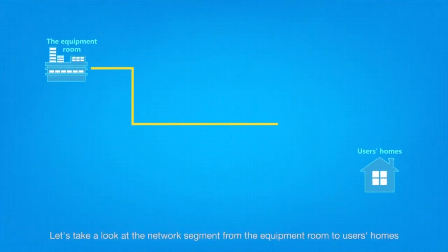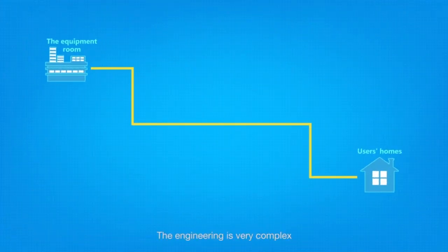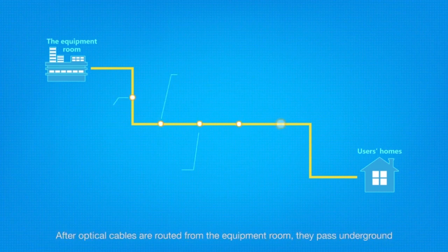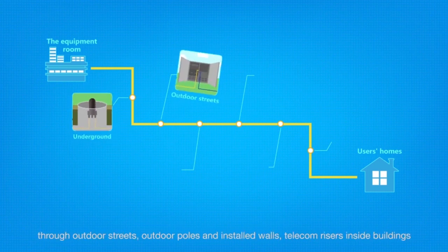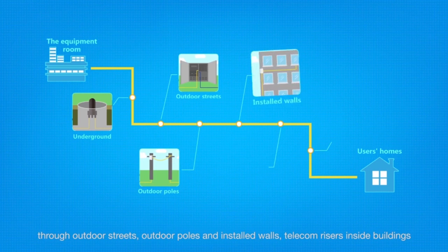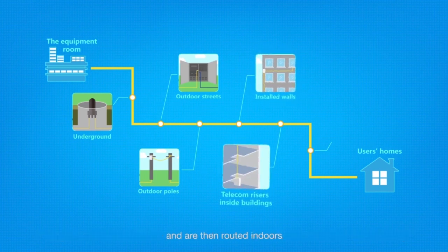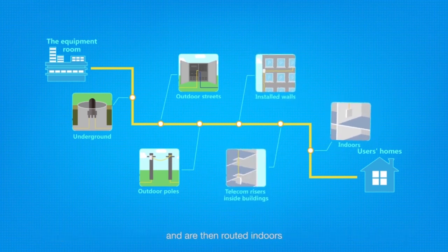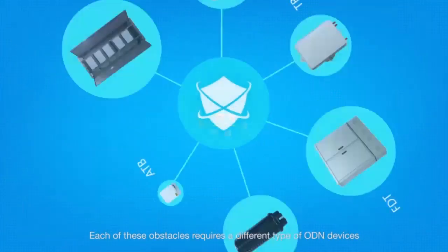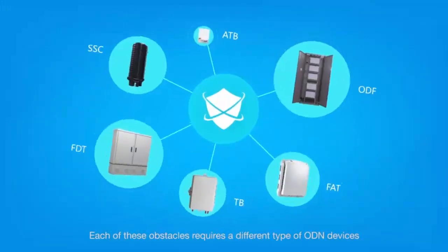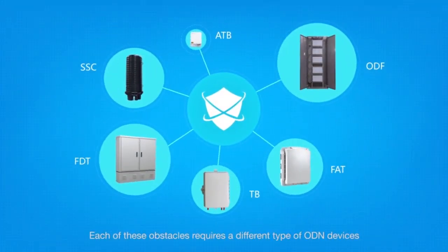Why are there so many ODN devices? The engineering is very complex. After optical cables are routed from the equipment room, they pass underground through outdoor streets, outdoor poles, and installed walls, then through telecom risers inside buildings, and are then routed indoors. Each of these optical paths requires a different type of ODN device.